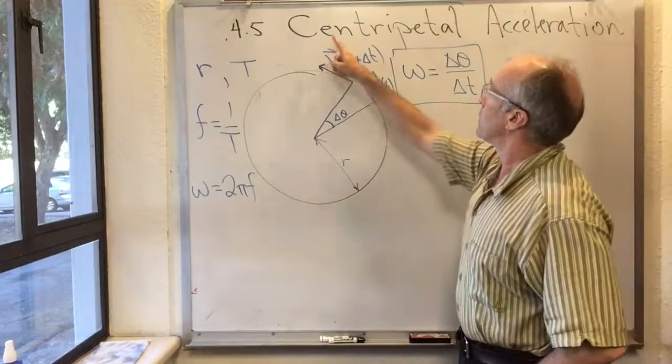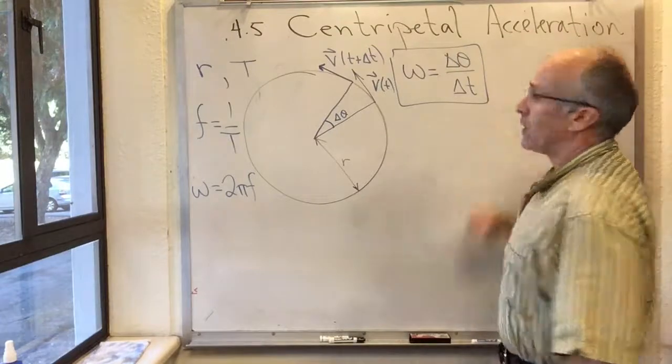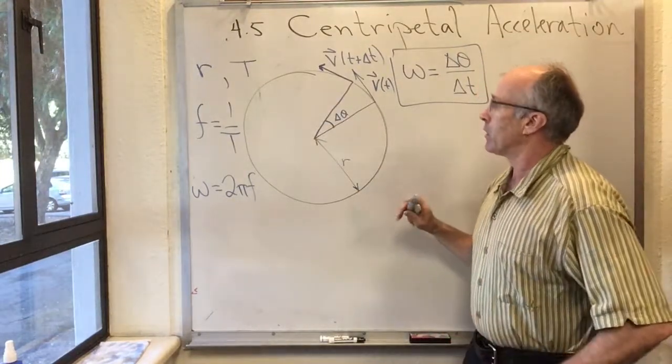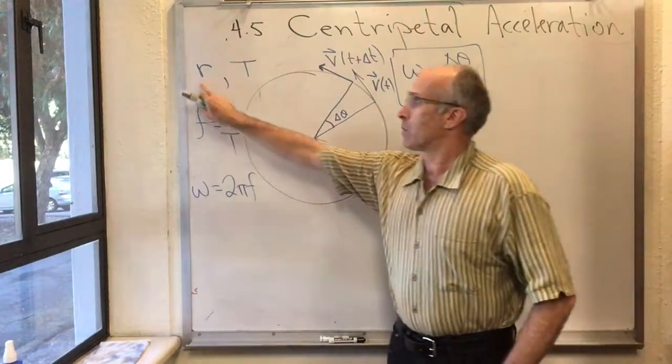This flip lecture covers centripetal acceleration. Here's the standard picture of a particle going uniformly around a circle. The circle has radius r.